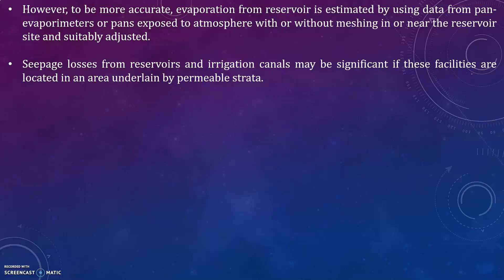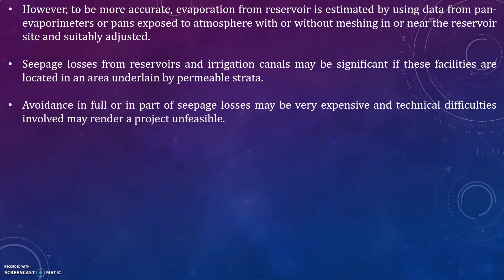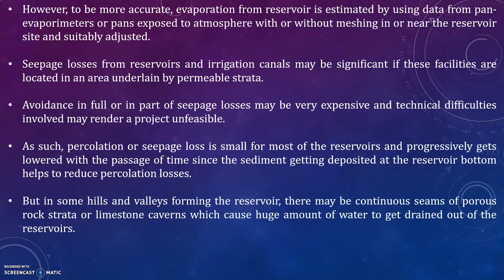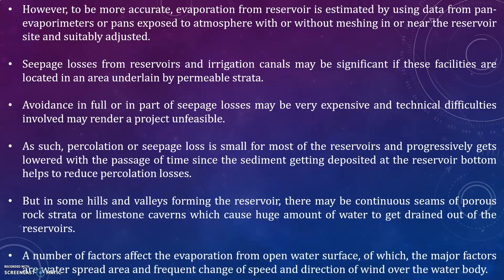Seepage losses from reservoirs and irrigation canals may be significant if these facilities are located in areas underlain by permeable strata. Seepage loss is small for most reservoirs and progressively decreases over time, since sediment deposited at the reservoir bottom helps reduce percolation losses. However, in some hills and valleys, continuous seams of porous rock strata or limestone caverns may cause large amounts of water to drain out. Major factors affecting evaporation include water spread area and frequent changes in speed and direction of wind over the water body.